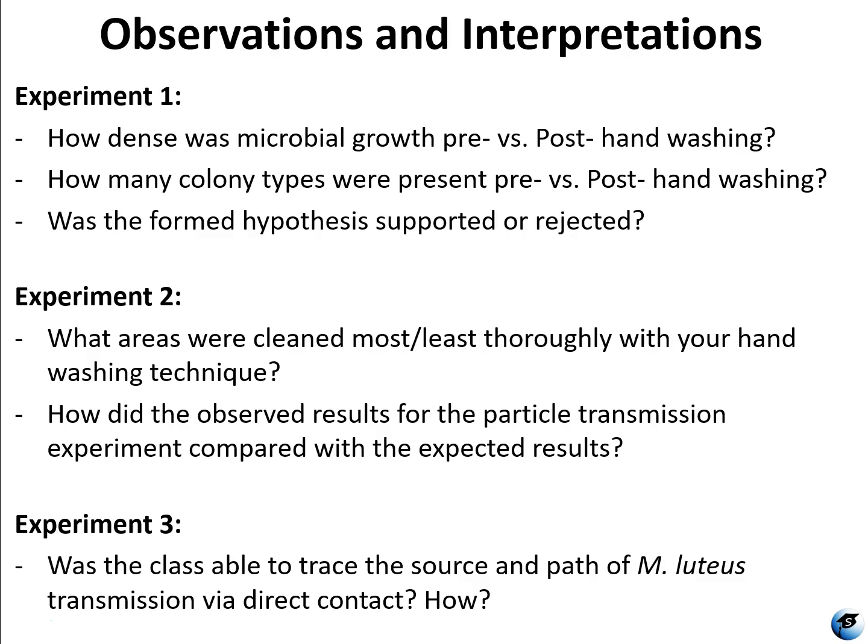For experiment three, you're going to be looking for Micrococcus luteus in the plates. Depending on where it ended up and the order in which we shook hands, hopefully we'll be able to trace back where Micrococcus luteus started and how it got to where it ended up. For experiment two, you get those results right away because nothing has to be incubated. You want to look at what areas on your hand still have glow germ powder glowing under UV after washing. Some of you may expect to see no powder after washing and find powder under your nails or in the creases — you're just comparing what you thought would happen to what actually happened.